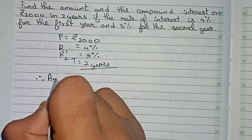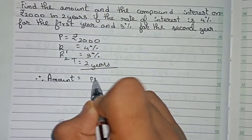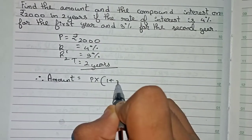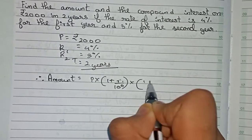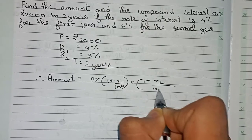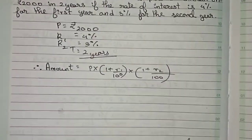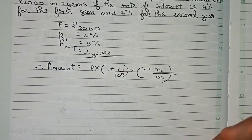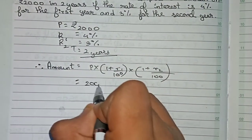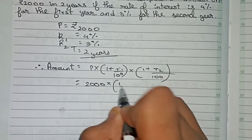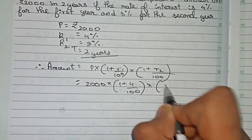The formula for amount is: Amount = Principal × (1 + R1/100) × (1 + R2/100). So substituting our values, it becomes 2000 × (1 + 4/100) × (1 + 3/100).